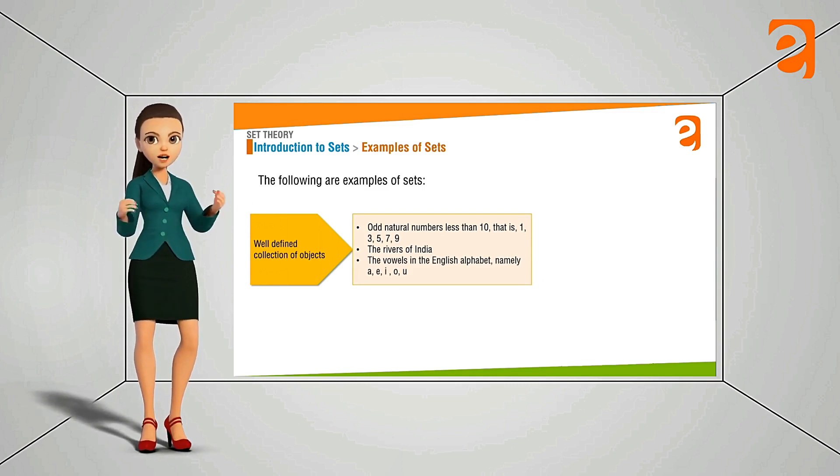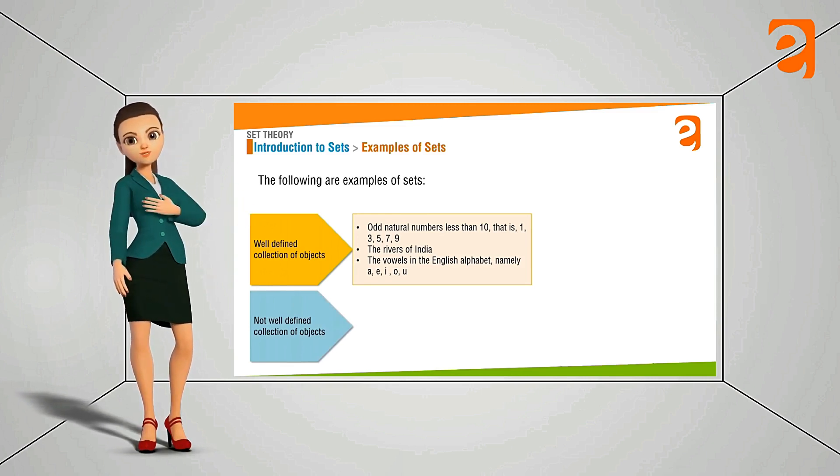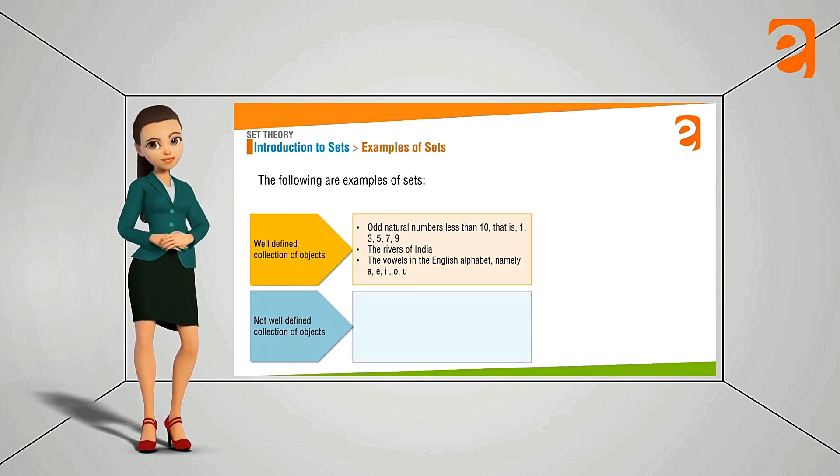Similarly the vowels of the English alphabet A, E, I, O, U. This can be a well-defined set. Let us look what is not well-defined and how we can say that this is not a set.